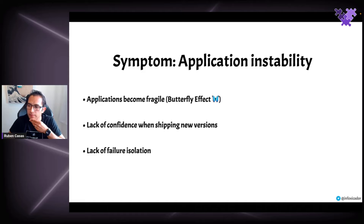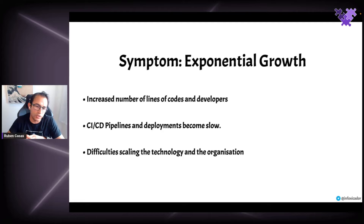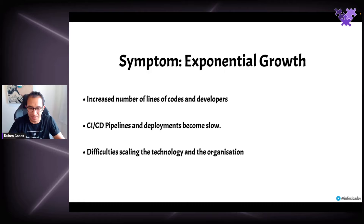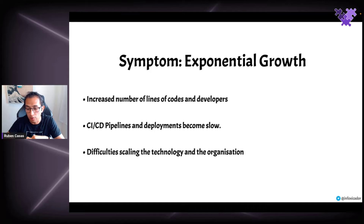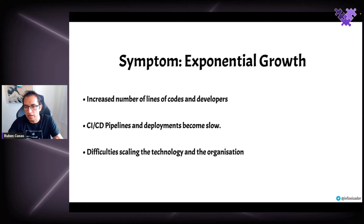This causes a lack of confidence when shipping new features, because you know that whatever you touch is going to break the application. That's also because of lack of failure isolation — the whole application goes down if there is a small change that causes a problem. The next symptom is exponential growth. Exponential growth is actually a good thing — if your company isn't growing, you're in trouble. But the problem is when growth is exponential: lots of new developers coming in, features increasing, CI/CD pipelines becoming really slow, deployments taking hours, and managing both infrastructure and people becomes difficult.